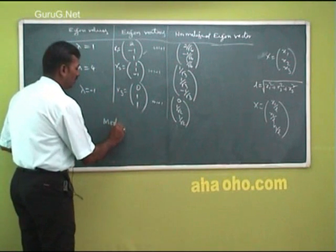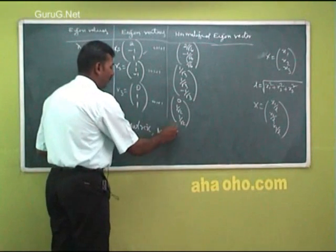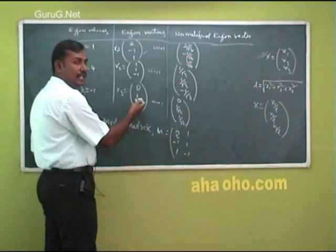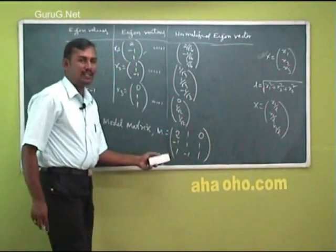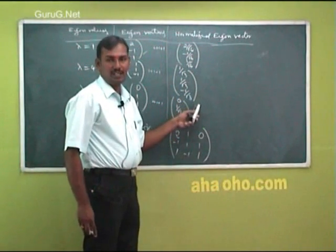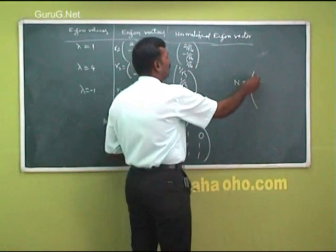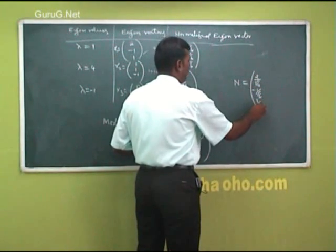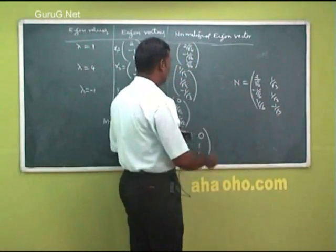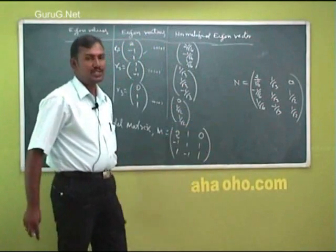Now what do you mean by modal matrix? The modal matrix is obtained by writing the eigenvectors as columns of the matrix. So M equals the matrix whose first column is the first eigenvector, second column is the second eigenvector, and third column is the third eigenvector. The normalized modal matrix N is formed by writing the normalized eigenvectors as columns. So the first column is [2/√6, -1/√6, 1/√6], the second column is [1/√3, 1/√3, -1/√3], and the third column is [0, 1/√2, 1/√2].